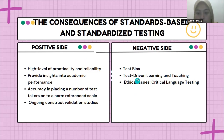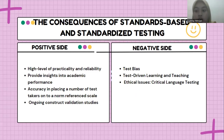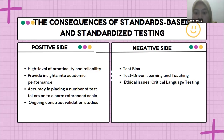On the negative side, we have first, test bias. For example, if a student moves from Hawaii and is given a test asking them to describe a snowy winter, the test will be biased because the student lacks any experience with snowy winters. The second is test-driven learning and teaching. When students and other test takers know that one single measure of performance will determine their life, they are less likely to take a positive attitude toward learning.